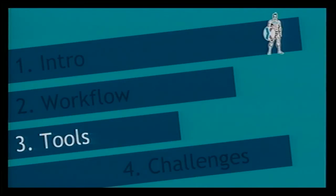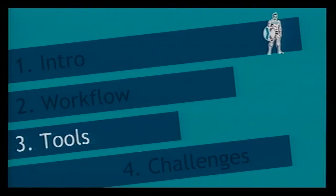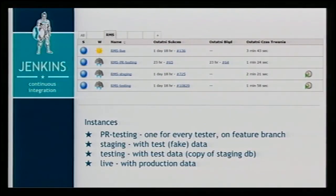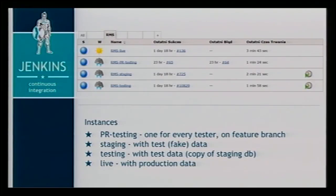OK, the tools - and this is where the contest begins! If you know in which programming language the tool is written, just raise your hand and say it loudly. Jenkins - yes, it's written in Java. In our Jenkins setup we have four builds. We have PR testing: this is a build where the tester can build their own instance on whatever branch they want. They go to GitHub, copy the branch ID, go to Jenkins configuration, fill in the branch ID, hit 'Build Now', and after a few seconds or minutes they have their own instance on that branch to test.